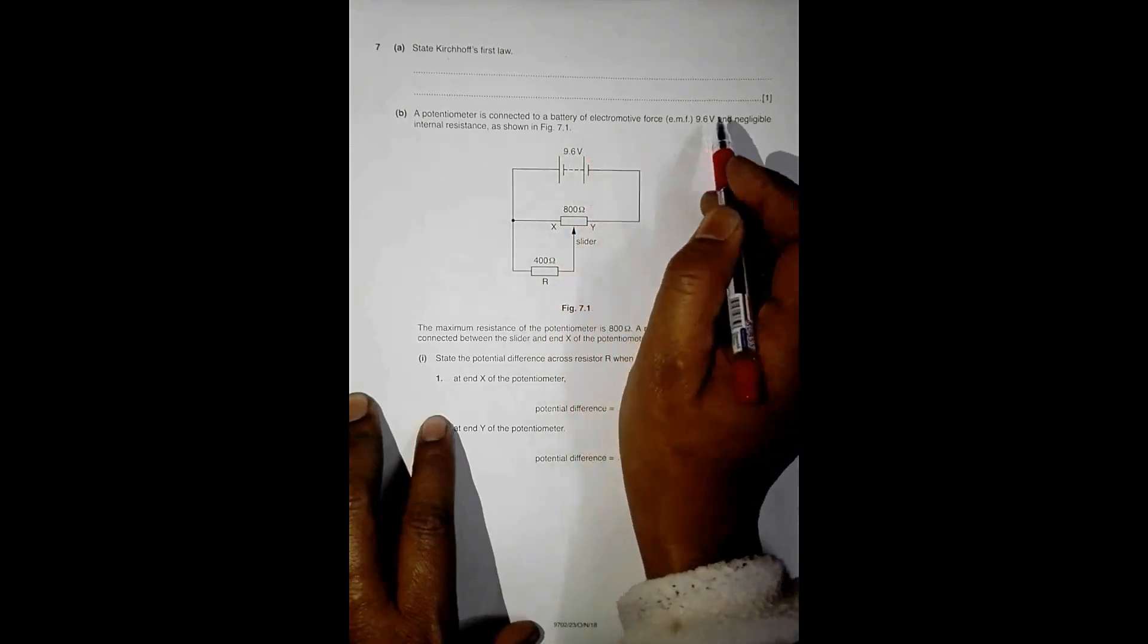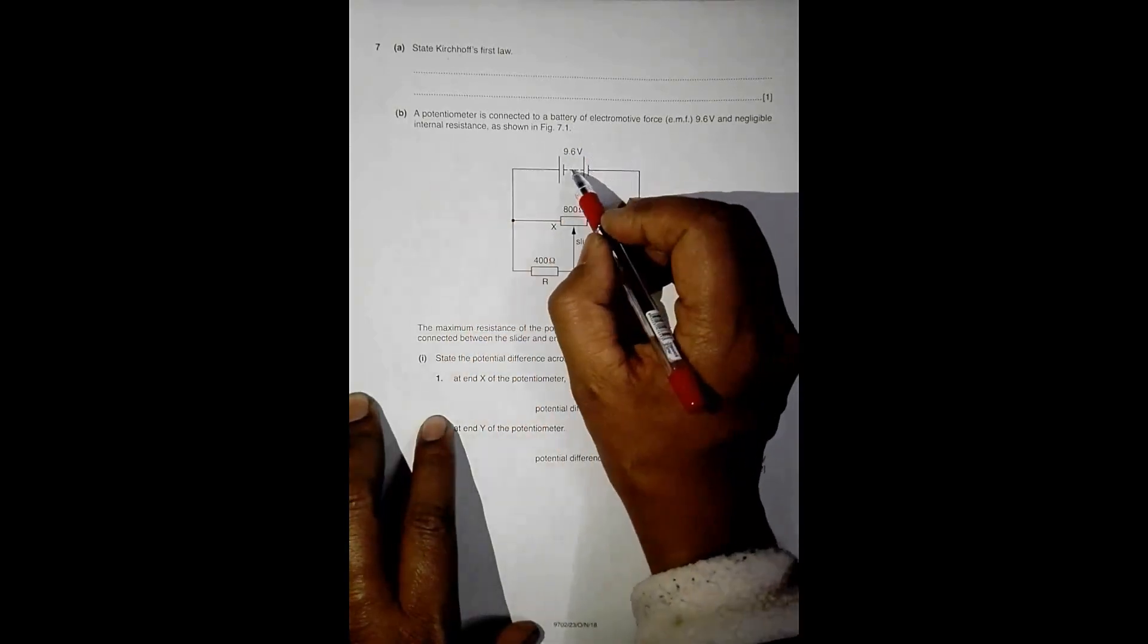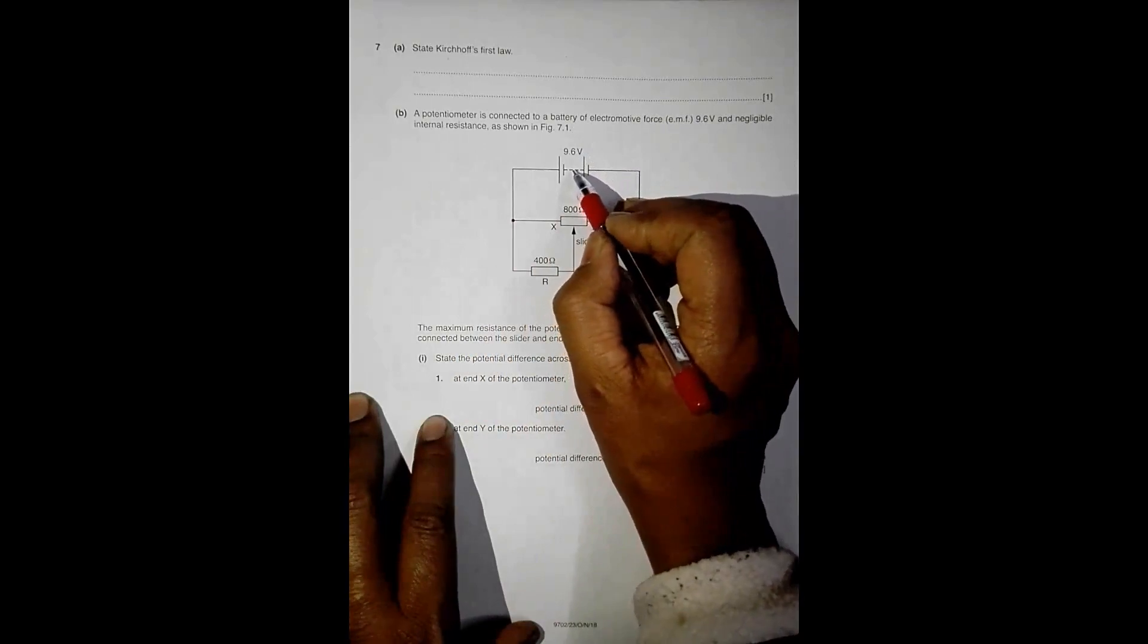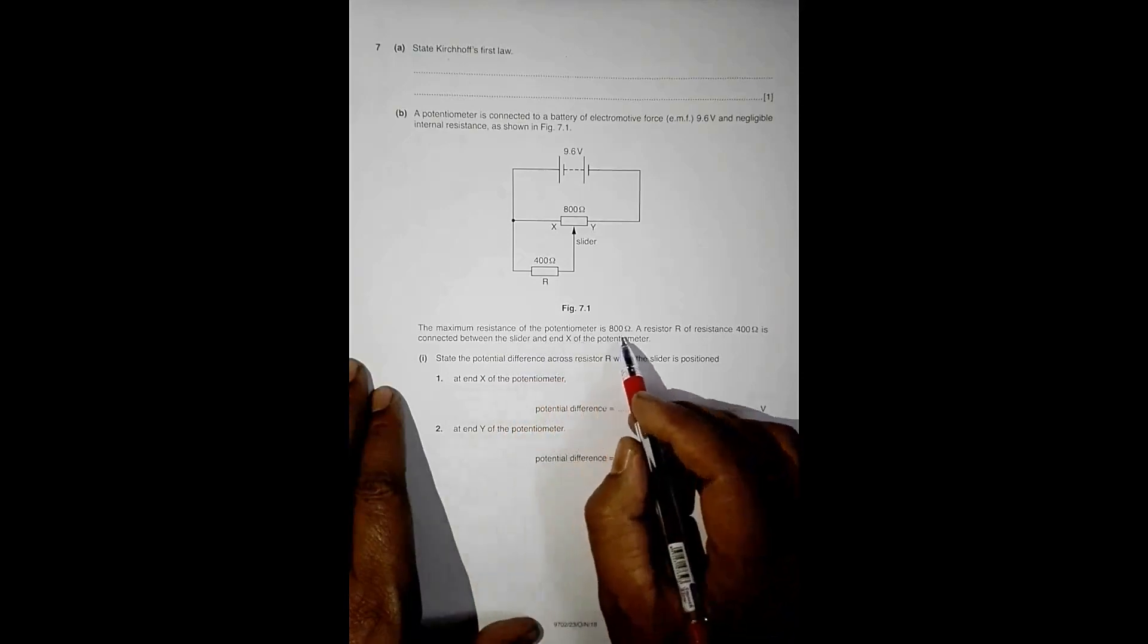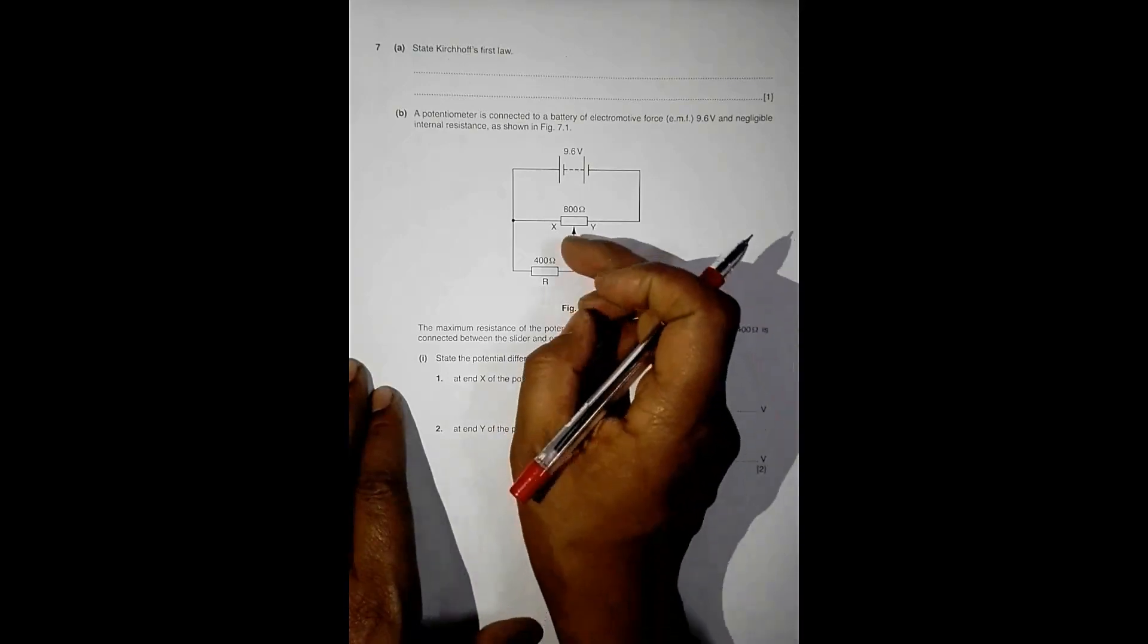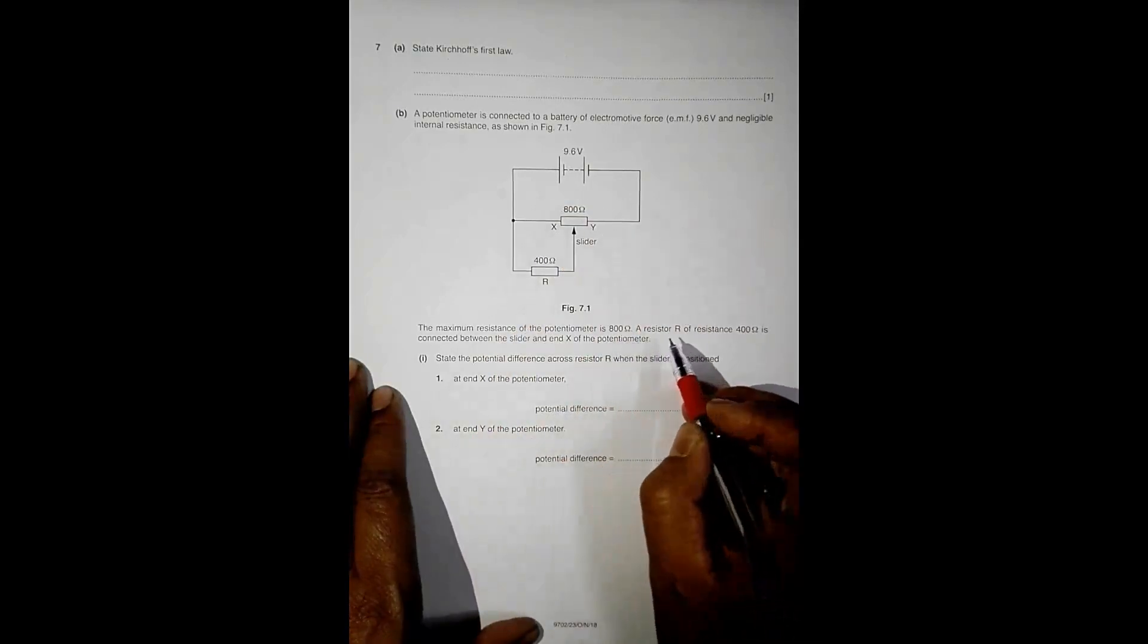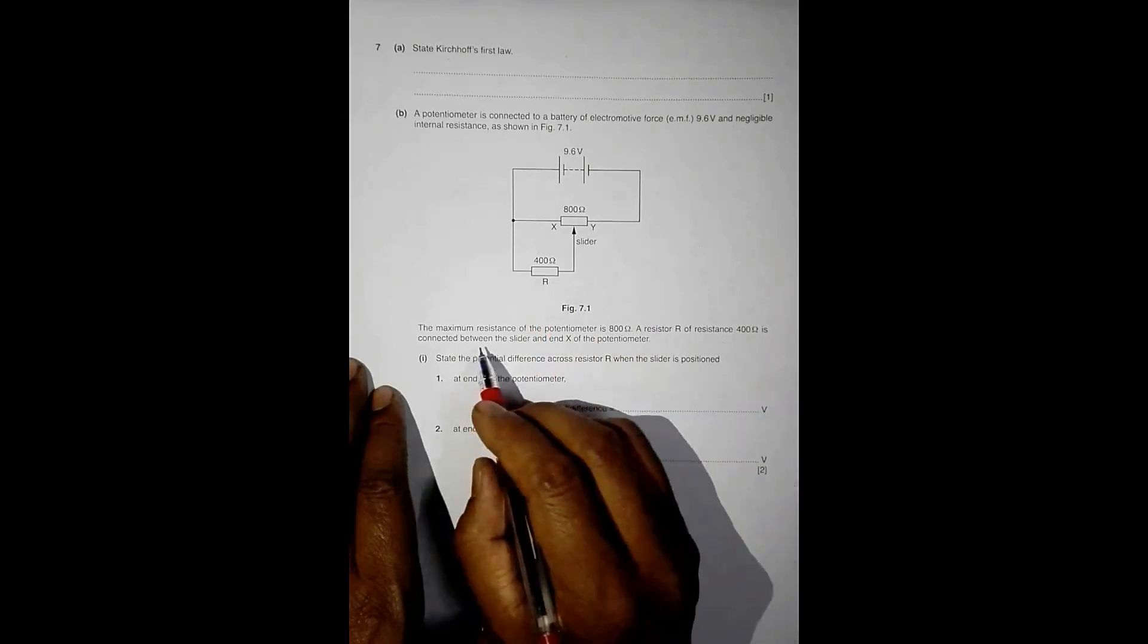It says that a potentiometer is connected to a battery of electromotive force 9.6 volts and negligible internal resistance, so we don't have to consider the internal resistance. The maximum resistance of the potentiometer is 800 ohms, so that means if a current flows through the whole potentiometer the resistance is 800 ohms.